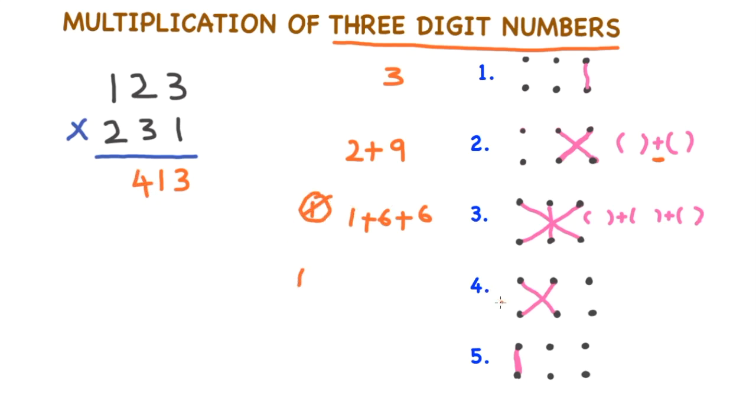Step 4: 1 into 3 is 3, plus 2 into 2 is 4. 3 plus 4 is 7, 7 plus carry over 1 is 8. Step 5: Multiply these two digits. 1 into 2 is 2. In this way, you can multiply three digit numbers very easily.